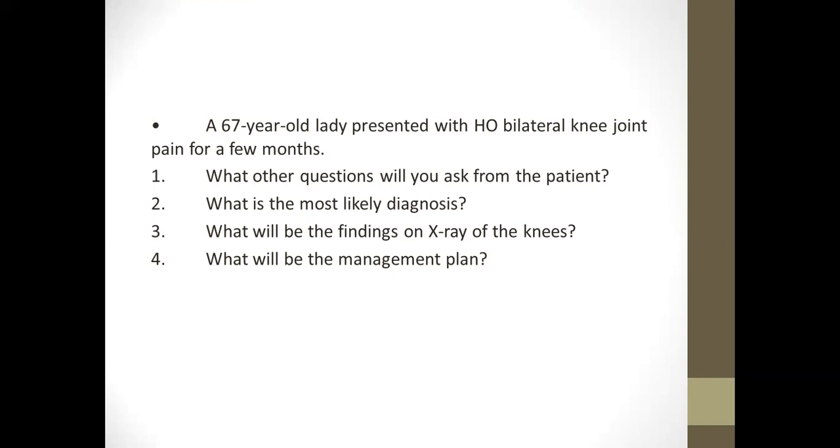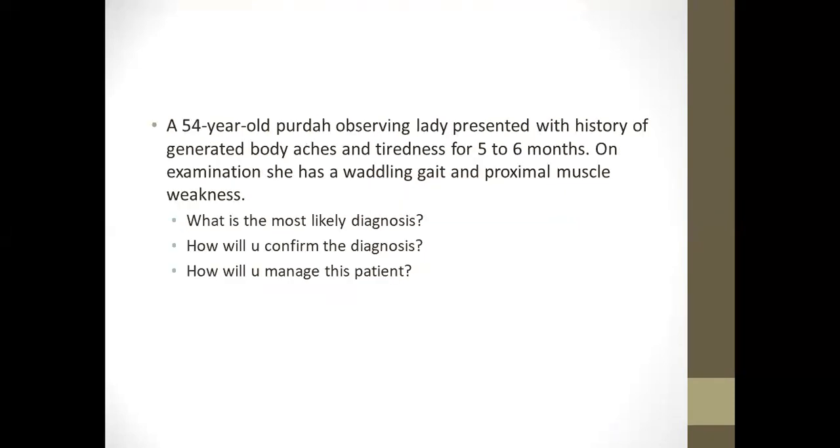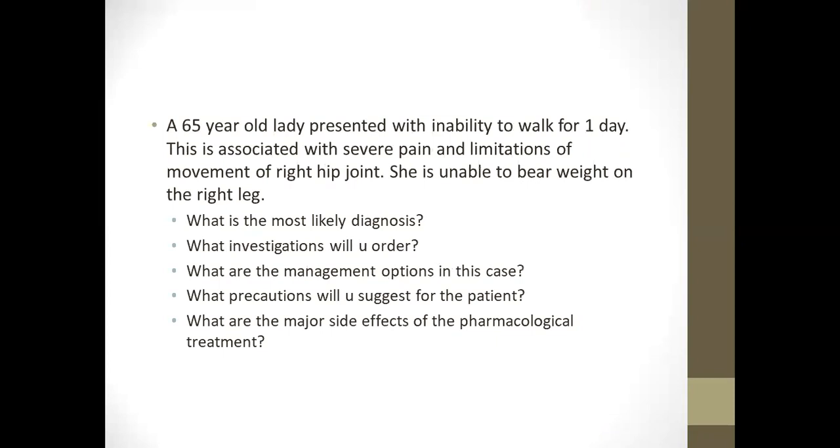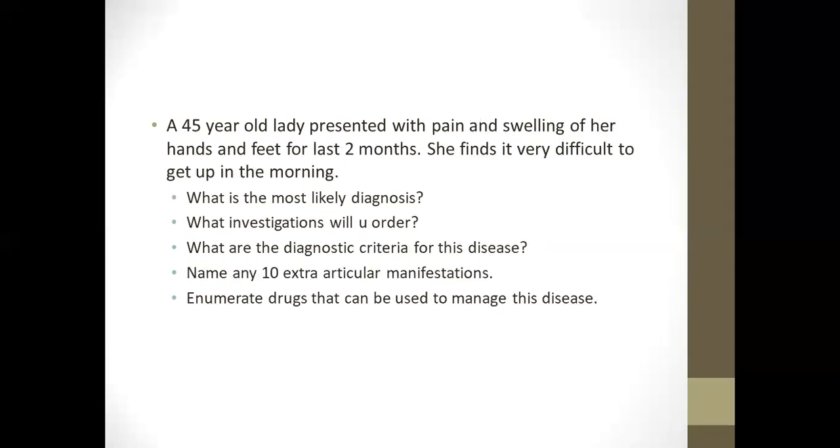We'll discuss these cases. A 67-year-old lady presents with bilateral knee joint pain for a few months. A 54-year-old obese lady presents with generalized body aches and tiredness for five to six months with waddling gait and proximal muscle weakness. A 65-year-old lady presented with inability to walk for one day, associated with severe pain and limitation of movement of right hip joint. She's unable to bear weight on the right leg. Another case: a 45-year-old lady who presented with pain and swelling of her hands and feet for two months. She finds it very difficult to get up in the morning.